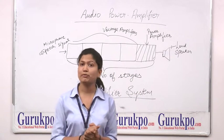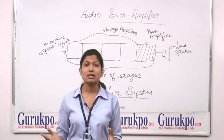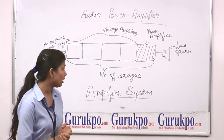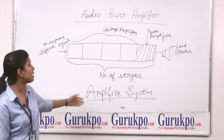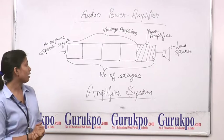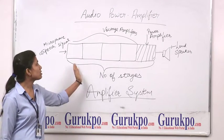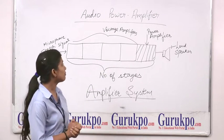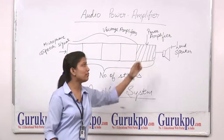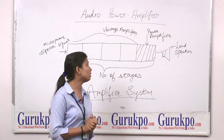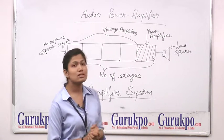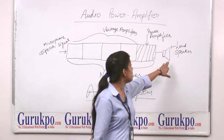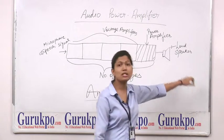Audio power amplifiers are designed to drive loudspeakers. Here we see the block diagram of an amplifier system. The initial stages of the amplifier are voltage amplifiers, and the last stage — where the signal change occurs — is the power amplifier, which is used to drive the loudspeaker.